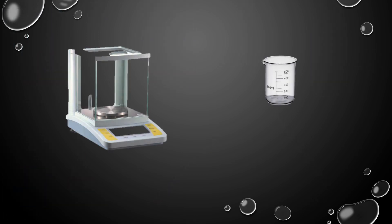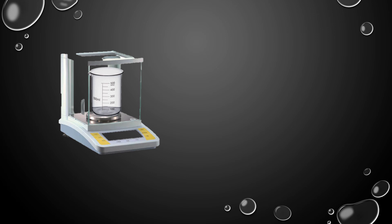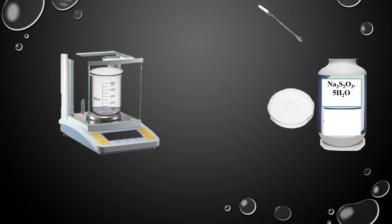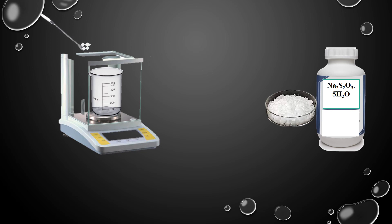Turn the weight balance on. Place the beaker on the weight balance — it displays the beaker's weight. Adjust the weight using the tare button so the weight of the beaker appears as zero. Then take 6.21 grams of sodium thiosulfate in the beaker with the help of a spatula.